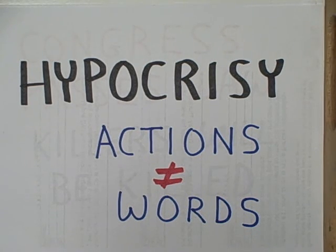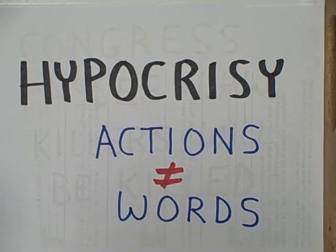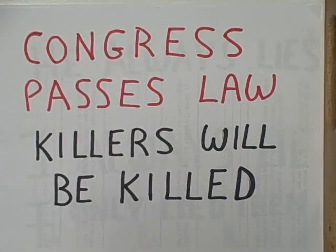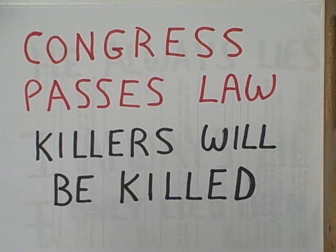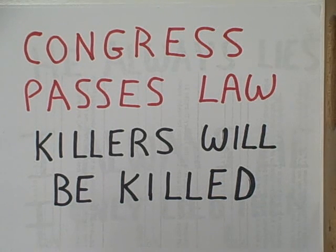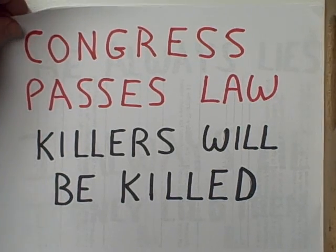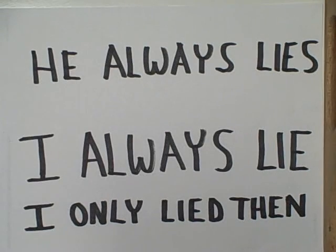Another kind of inconsistency would be hypocrisy — a situation where actions and words do not match. Consider the following act by Congress: Congress passes a law saying that killers will be killed, perhaps in the form of murderers being executed. Some opponents of capital punishment regard such laws as inconsistent or hypocritical. Well, they are not paradoxical, because the law passed by Congress makes no claim about whether or not Congress can pass such a law. It may be hypocritical, but it is clearly not paradoxical.